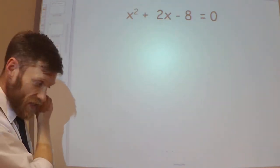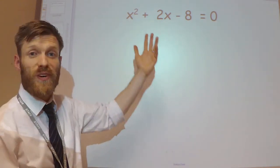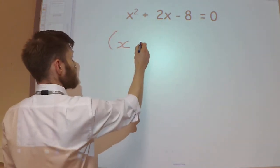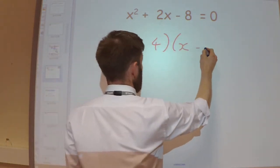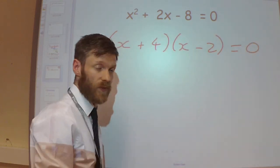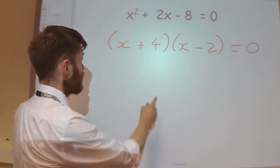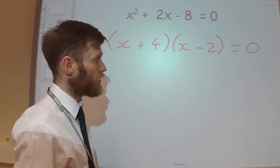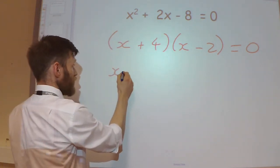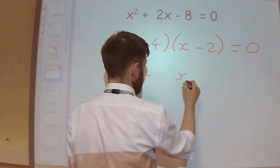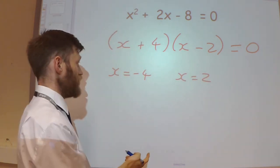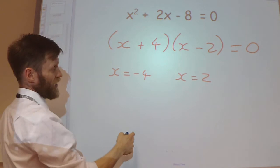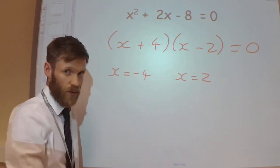To introduce the factor theorem, I want to take us back to GCSE for a moment. When you were asked to solve something like this, you first factorized it and wrote it as x plus 4 times x minus 2 equals 0 — two factors. Then you said x equals minus 4 or x equals 2, because when you substitute 2 into this equation you get 0, or when you substitute minus 4 into this equation you get 0.